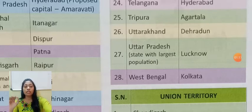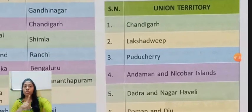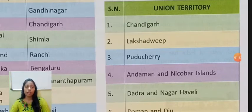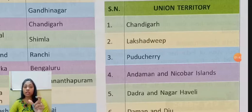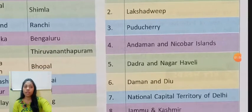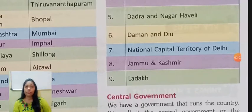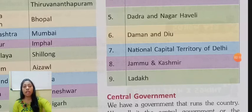Ab 28 states ke alawa, we have 9 union territories. Union territories ke sirf names hum log ko learn karne hote hain. Chandigarh jo Punjab aur Haryana dono ki capital city thi, woh ek union territory bhi hai. Number 2: Lakshadweep. Number 3: Puducherry. Number 4: Andaman and Nicobar Islands. Number 5: Dadra and Nagar Haveli. Number 6: Daman and Diu. Number 7: National Capital Territory of Delhi. Number 8: Jammu and Kashmir. Number 9: Ladakh.